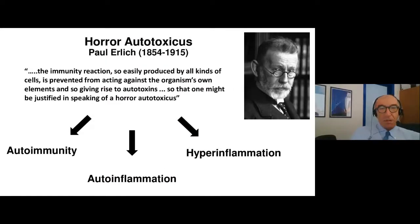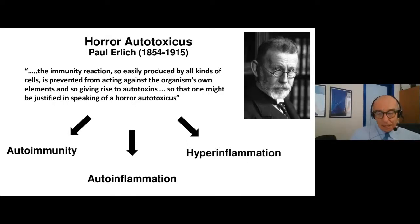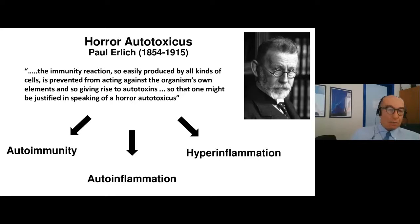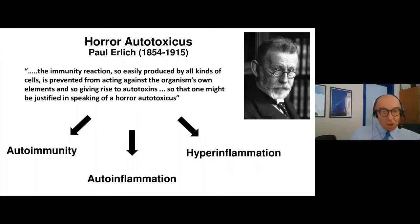So what are we talking about? We are talking about something that was actually identified more than 100 years ago, which is the horror autotoxicus by Paul Ehrlich, who really wanted to make clear that the organism is prevented from reacting against itself. And therefore, he derived this concept of horror autotoxicus. We have now used this in the modern era, applying it to autoimmunity, but we have also recognized other phenomena of dangerous or damaging immune responses, such as autoinflammation and hyperinflammation.